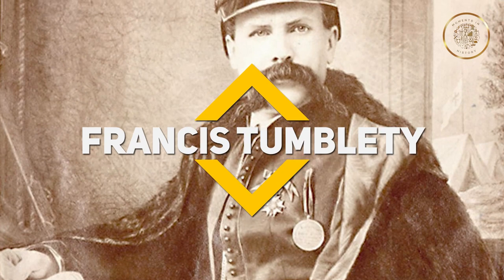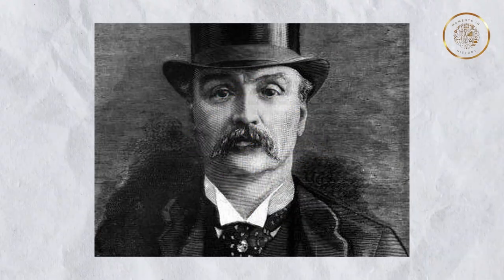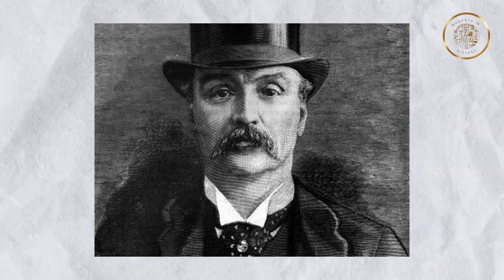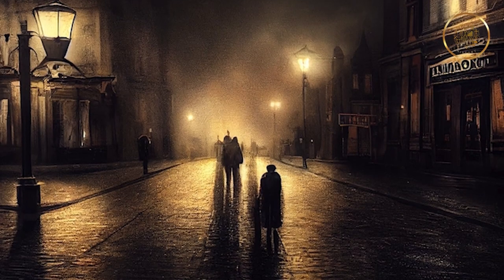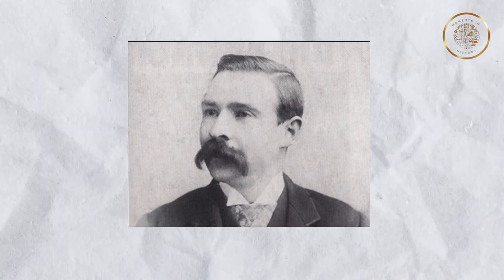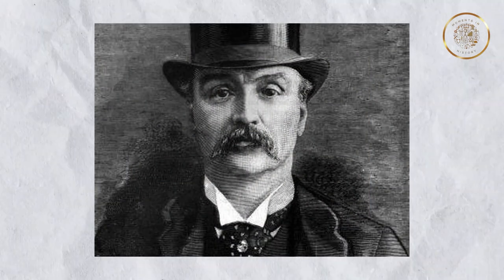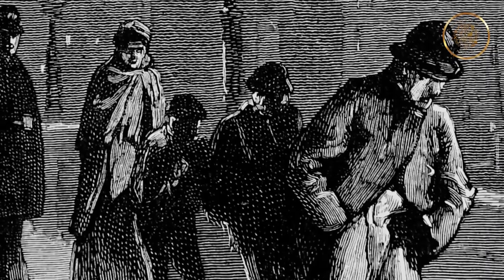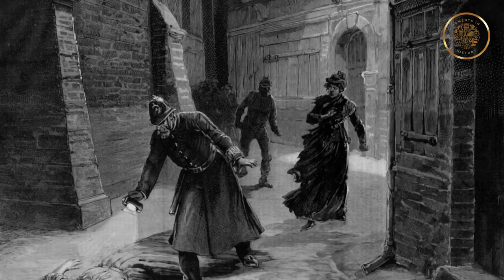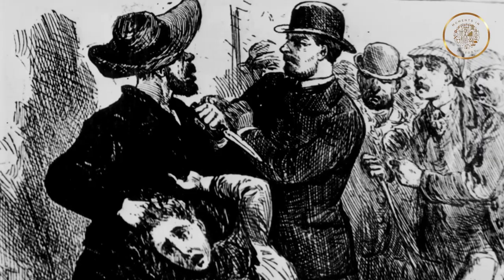Theory 3: Francis Tumblety. Francis Tumblety, an eccentric American quack doctor, enters the realm of suspicion due to his notorious reputation and his presence in London during the time of the Ripper murders. Known for his dubious medical practices and flamboyant personality, Tumblety had a penchant for collecting anatomical specimens and harbored a deep-rooted animosity towards women. His involvement in the Ripper case gained attention primarily due to his arrest on unrelated charges shortly after the murders ceased, though the police lacked sufficient evidence to convict him.